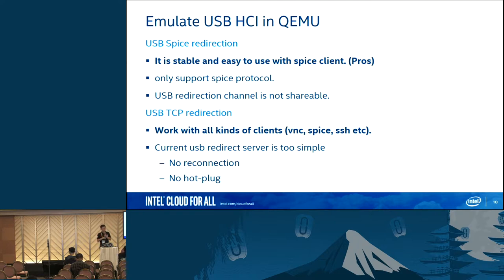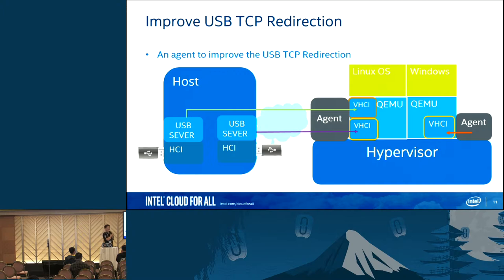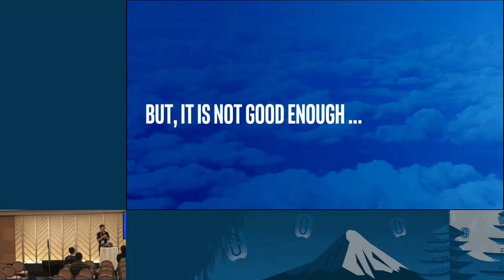We can improve this by having an agent running on the same machine as QEMU. The agent will fix the reconnection problem and the hot plug problem. Because we don't put code in the QEMU process, for any version of QEMU which supports TCP redirection, we can use it — so we don't need to depend on upstream or merge our code into QEMU. But it's still not good enough because we are not using the traditional virtualization way — we are using OpenStack Cloud — so we still need a way to work with the cloud environment.